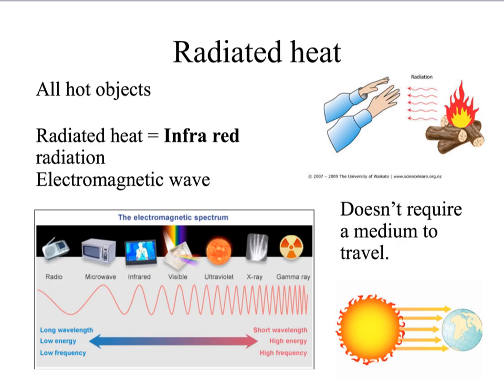Conduction and convection both need particles in order to work. Radiation doesn't need any medium to travel. That means it doesn't have to travel through anything. It's actually the only method of heat transfer that can occur in a vacuum. It's because of this that heat energy can travel from the sun through space to the earth.